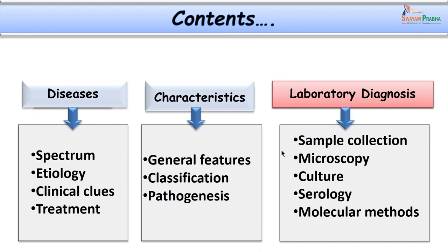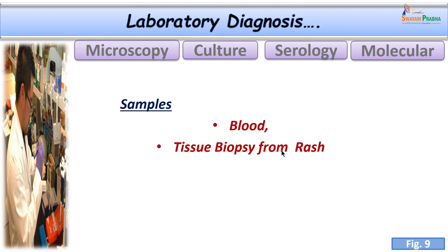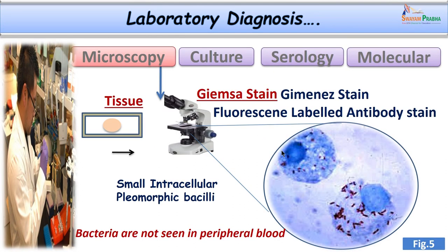Let us now go into understanding the laboratory diagnosis of these fevers. Different modalities include microscopy, culture, serological techniques and molecular techniques. Blood samples and tissue biopsy from the rash are collected — the best sample being tissue biopsy from the rash. The collected material is crushed, made into a smear or used for culture, and subjected to Giemsa stain, Gimenez stain, fluorescent-labelled antibody staining, or immunohistochemistry for tissue samples. Immunohistochemistry and fluorescent-labelled antibody stains are highly specific.